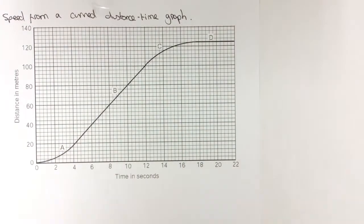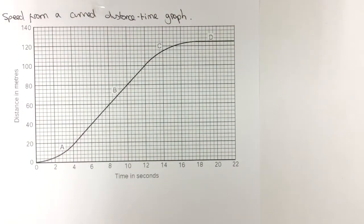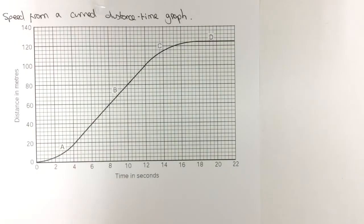In this video, we're going to look at how to find speed from a curved distance-time graph. Hopefully you remember in the previous video that we used the gradient of a distance-time graph to find the speed.